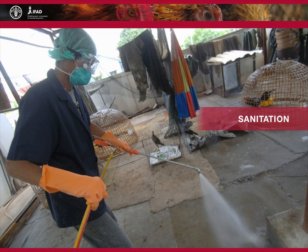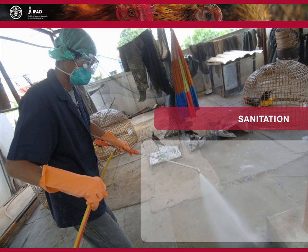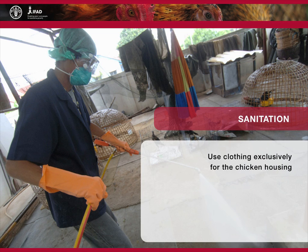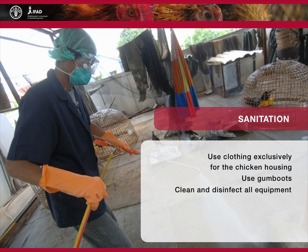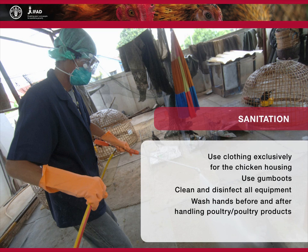The third step to keeping a healthy farm is sanitation. Cleaning equipment and housing, and maintaining personal hygiene will lead to the control of disease agents. This entails using fresh or dedicated clothing exclusively for the chicken housing, including gumboots, cleaning and disinfection of all equipment, and frequent washing of hands before and after handling poultry or their products. To ensure proper disposal of dead animals, make sure that adults bury any dead poultry.